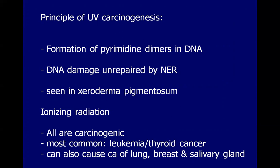In ionizing radiation, all forms of IR are carcinogenic. The most common types of cancer associated with ionizing radiation are leukemia and thyroid cancer, as evidenced by cancers found during nuclear holocaust and the Chernobyl incident. Aside from leukemia and thyroid cancer, it can also cause lung cancer, breast cancer, and salivary gland neoplasms. This is the end of the lecture. I hope that you have learned something during this time. Thank you and good day.